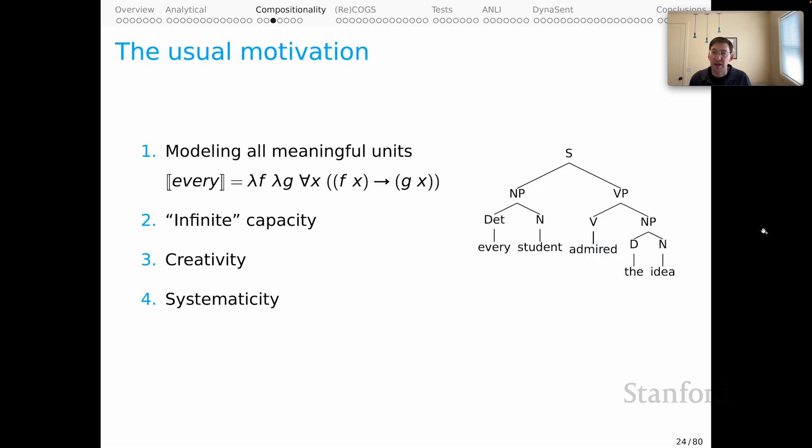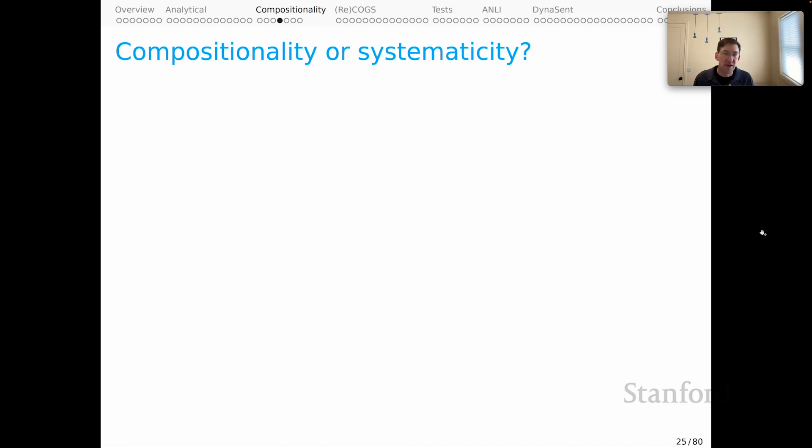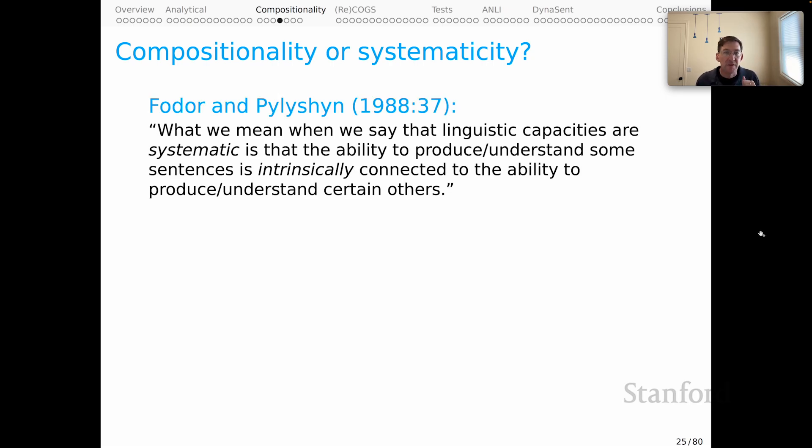There's also a related idea from cognitive science called systematicity, which I think is a slightly more general notion than compositionality and may be a more correct characterization. Let's dive into that a little bit under the heading of compositionality or systematicity. The systematicity idea traces, as far as I know, to Fodor and Pylyshyn. They say,